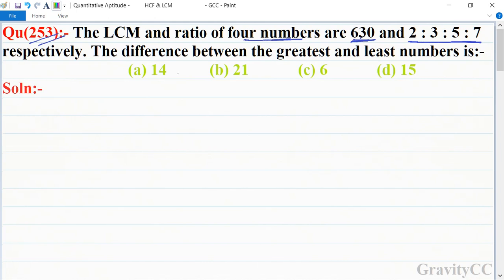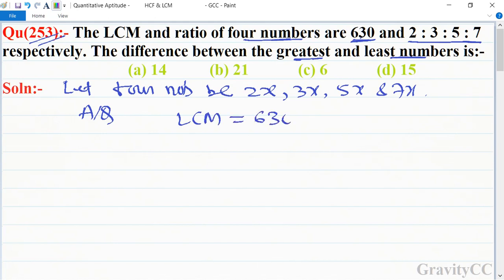So what is the difference between the greatest and least number? First of all, let the four numbers be 2x, 3x, 5x, and 7x. According to the question, their LCM is given as 630.